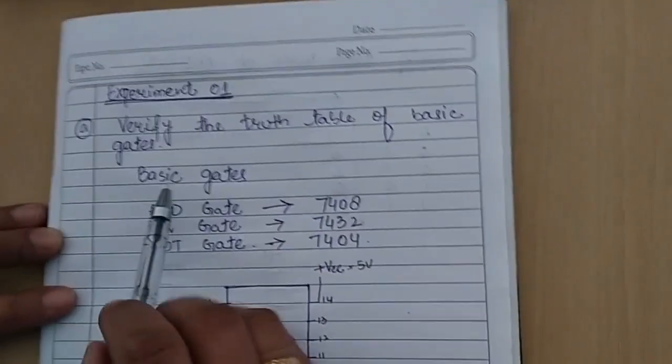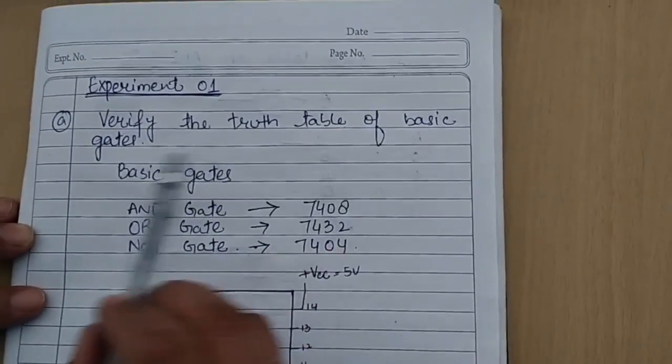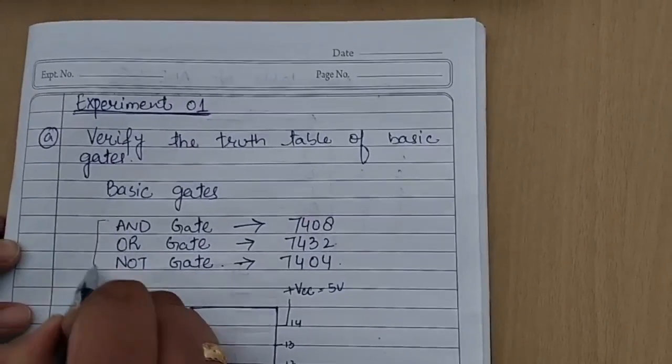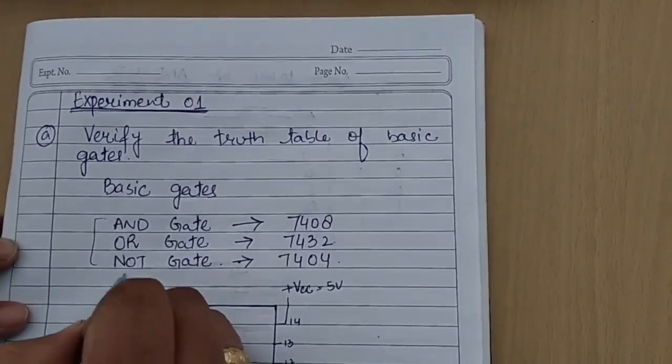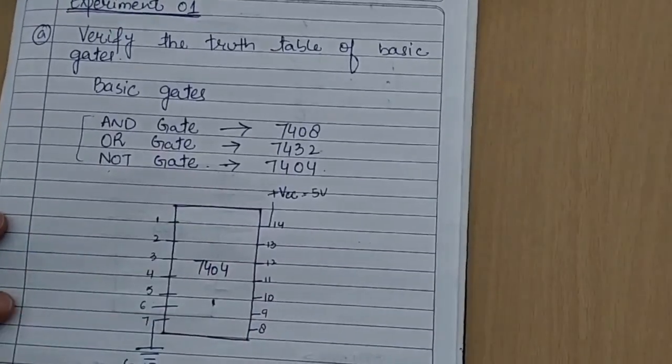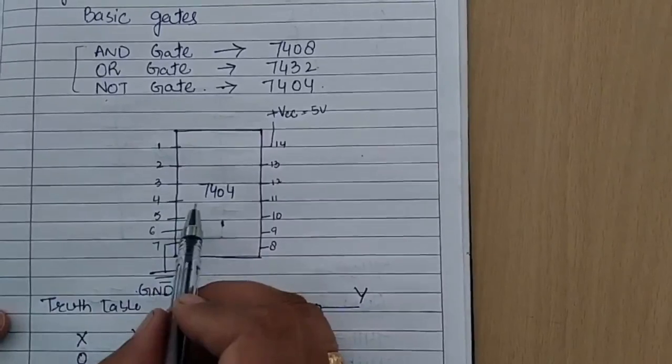Assalamu alaikum students, today we are going to do our first lab: verification of the truth table of basic gates. As you already know, we have three basic gates - AND, OR, and NOT. We are going to verify the truth table of each gate separately, starting with the NOT gate.